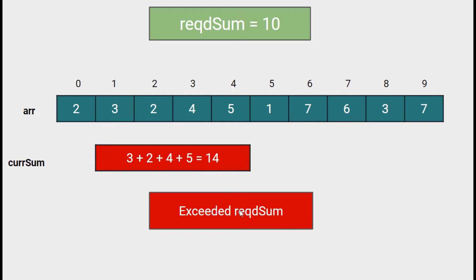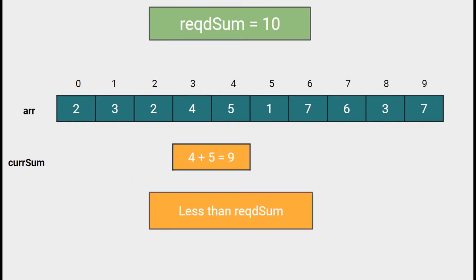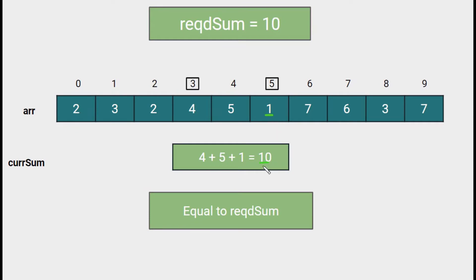So we try removing elements from the beginning. First we remove 3; the sum is 11, still more than required. So we remove one more element — removing 2 as well. Now the sum becomes 9, which is less than the required sum. On adding 1, we get 10, the required sum. So we can stop here and print the results.